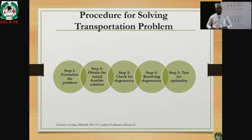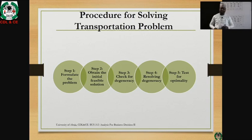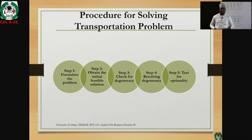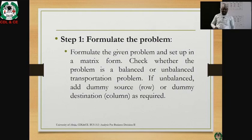There are procedures in solving a typical transportation problem. Step one is to formulate the problem. Step two is to obtain the initial feasible solution. Step three is to test for degeneracy. Step four, if there is degeneracy, we resolve it by introducing epsilon. Step five, we test for optimality using the stepping stone method and the modified distribution method, popularly called MODI.